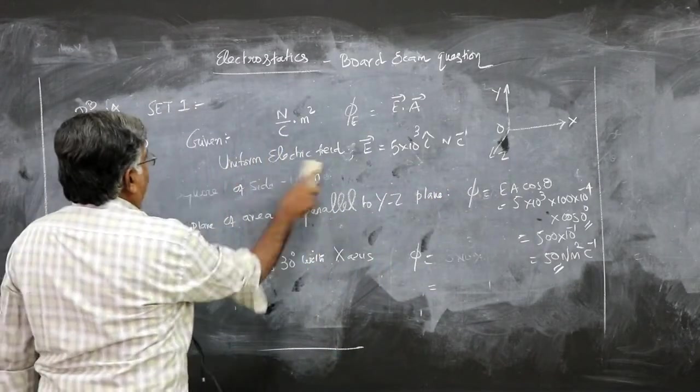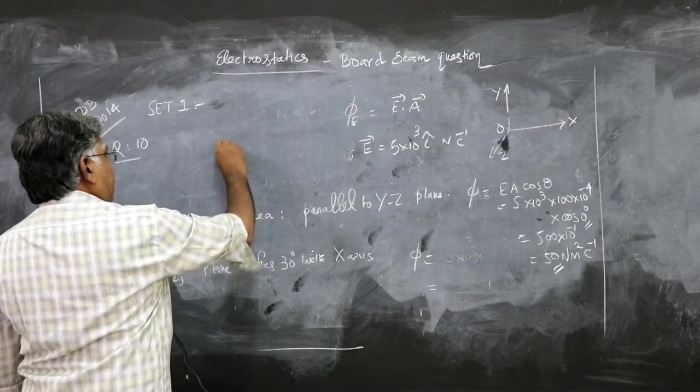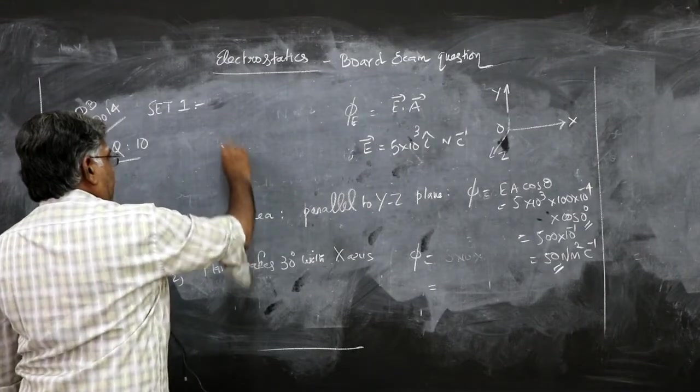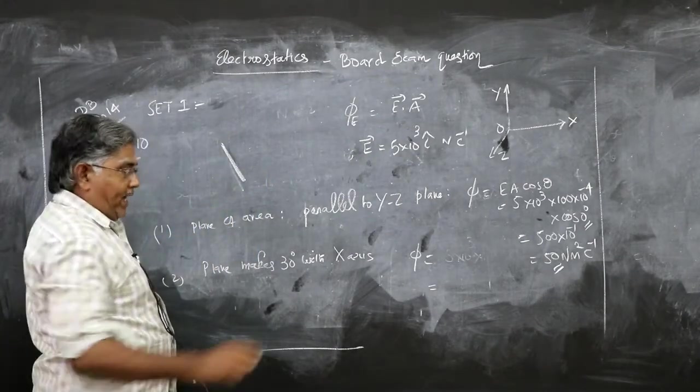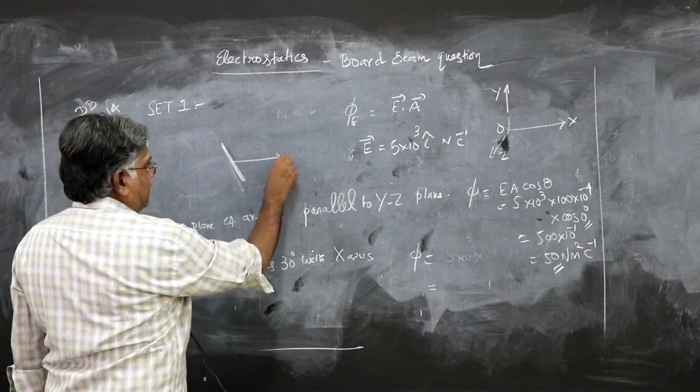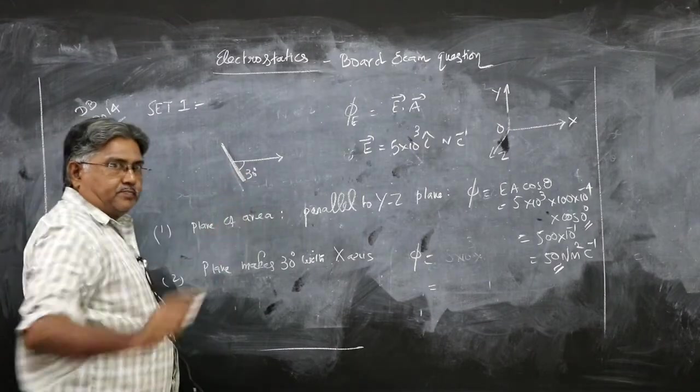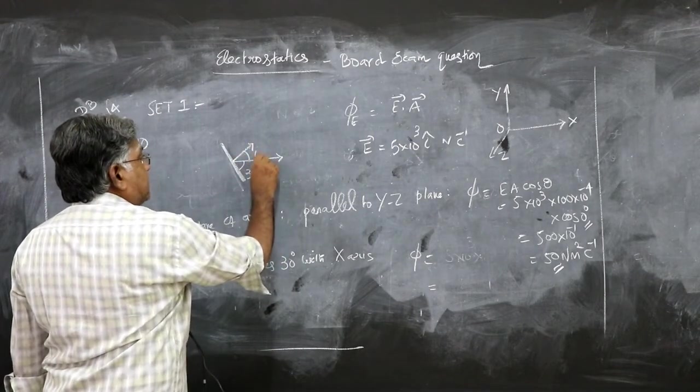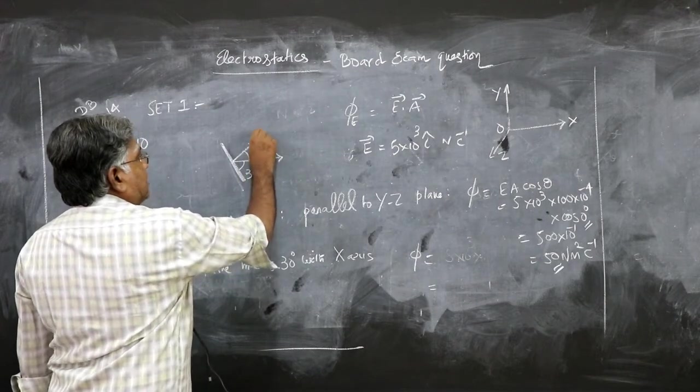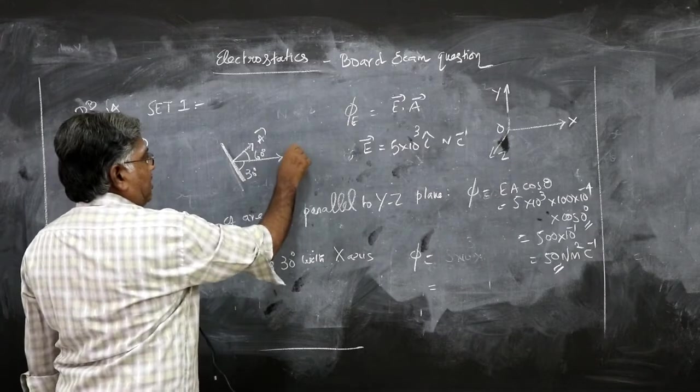So what happens in this case? Suppose this is the plane of the area, the plane of the area of the square. Let's say this is the x-axis. The plane makes 30 degrees with the x-axis, so perpendicular to the plane will make 60 degrees. This is the direction of the area vector.